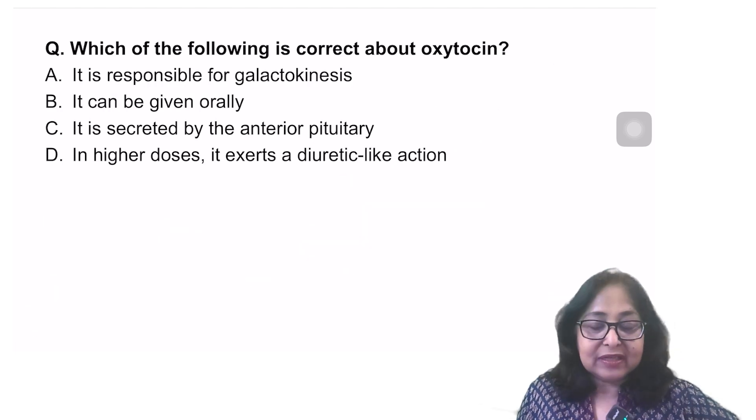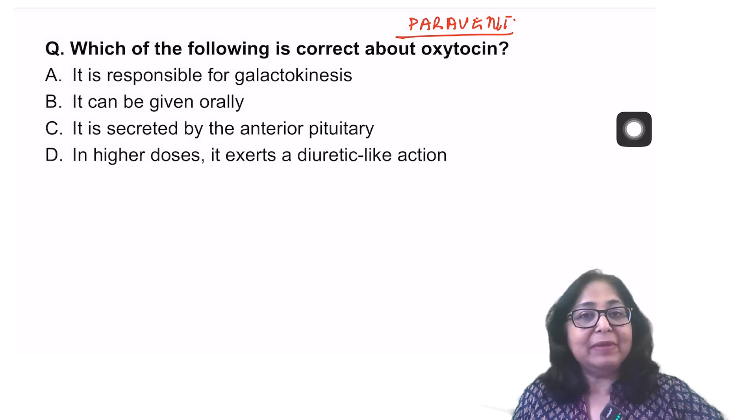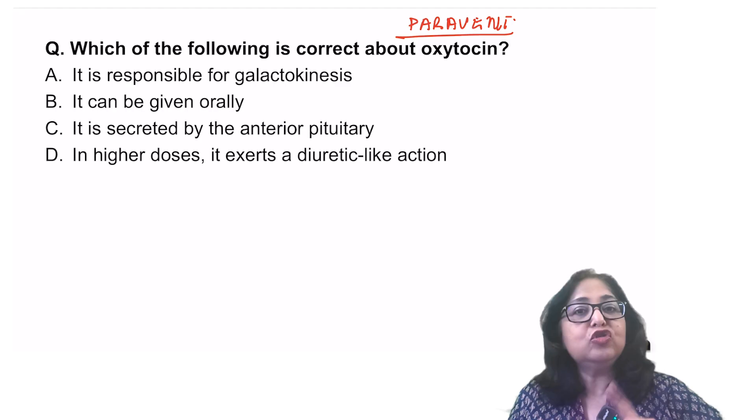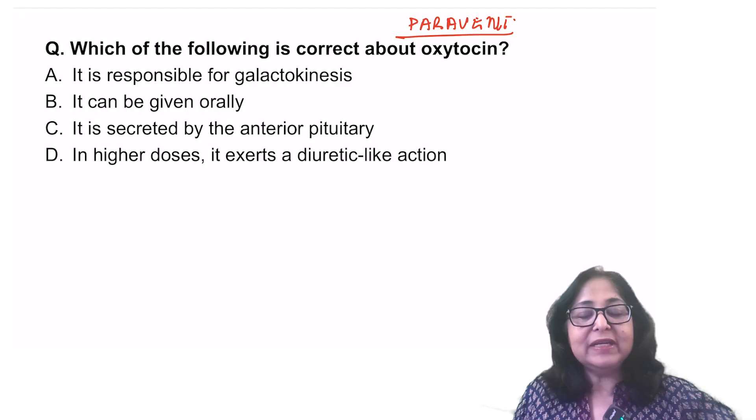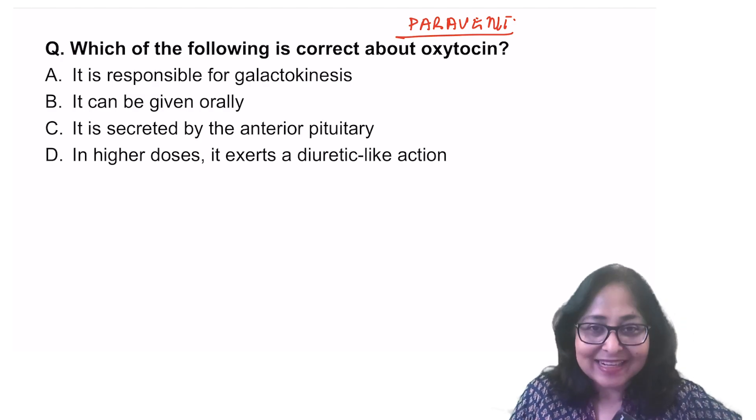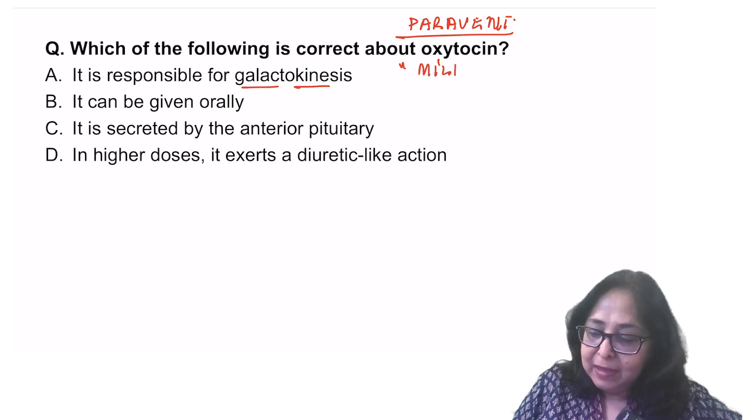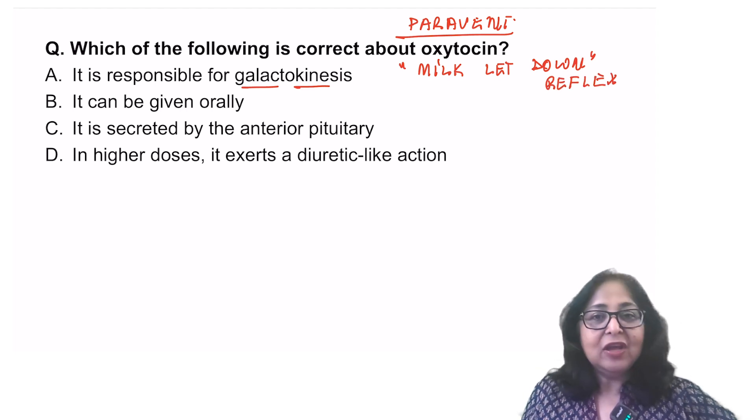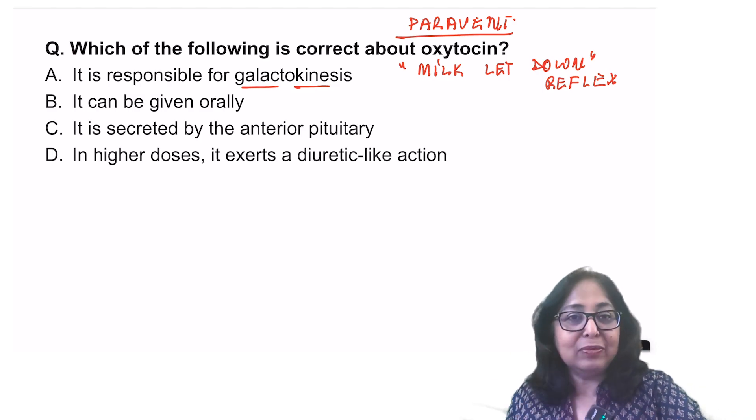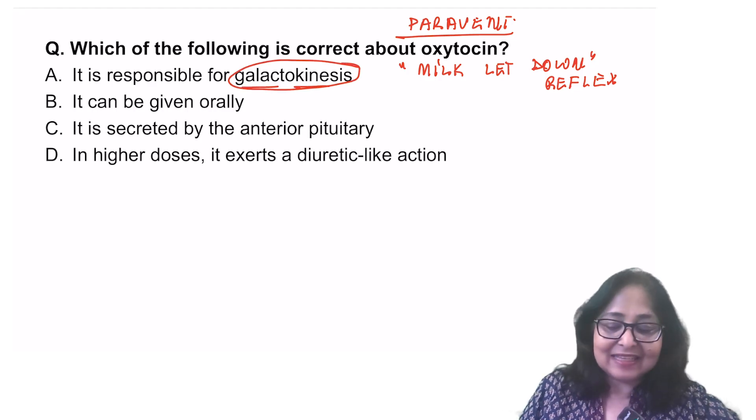Which of the following is correct about oxytocin? So oxytocin is synthesized in the paraventricular nucleus of the hypothalamus. The two important hypothalamic nuclei involved in the synthesis of the posterior pituitary hormones, supraoptic and paraventricular. ADH is mainly synthesized in supraoptic, oxytocin mainly in paraventricular nucleus. Now, is this hormone responsible for galactokinesis? Kinesis is movement. Galacto here refers to milk. So yes, it is responsible for the milk let down reflex, or also known as milk ejection. Oxytocin will cause contraction of the myoepithelial cells surrounding the ducts in the mammary glands, resulting in milk ejection. That is galactokinesis. So this is true?